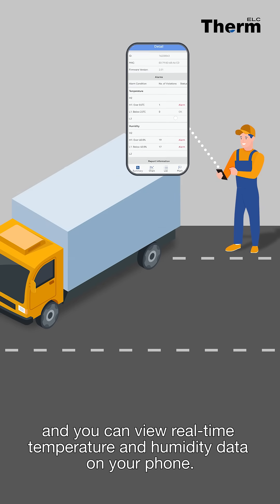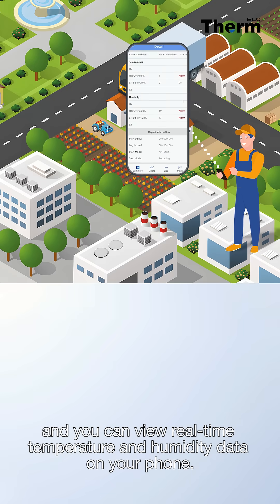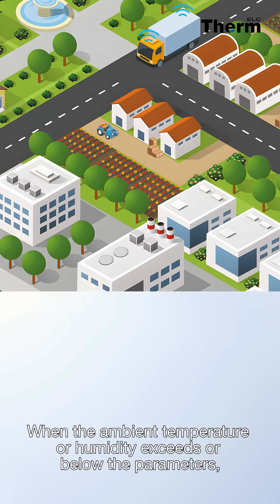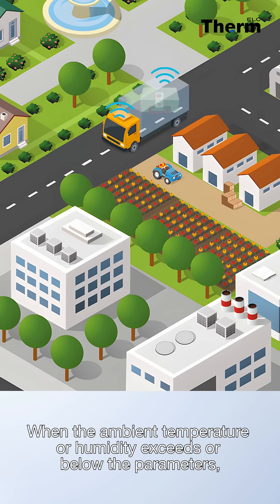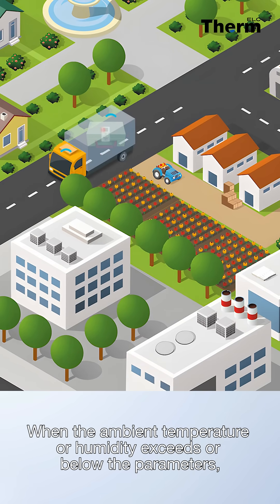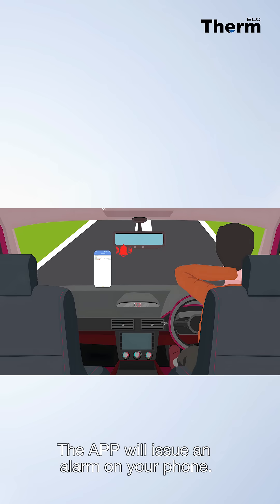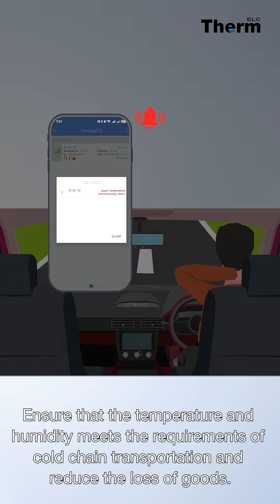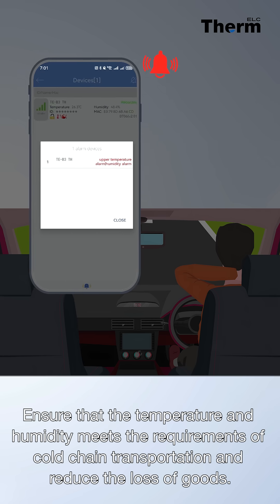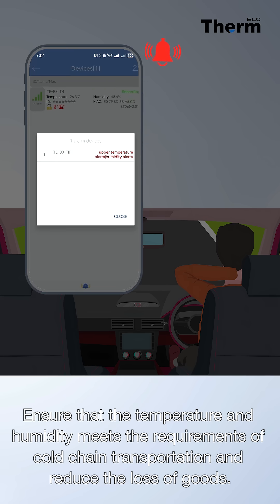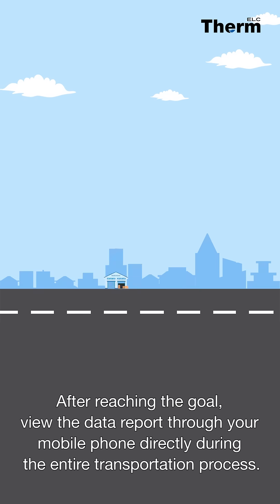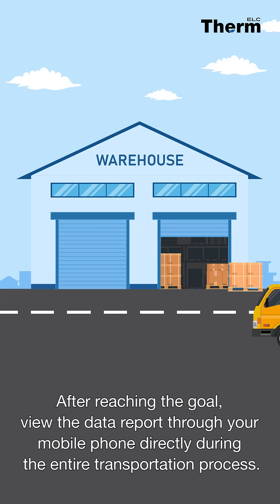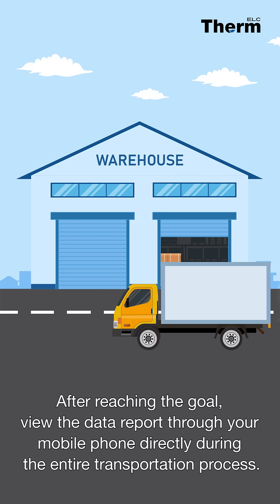You can view real-time temperature and humidity data on your phone. When the ambient temperature or humidity exceeds or falls below the set parameters, the app will issue an alarm on your phone to ensure that the temperature and humidity meets the requirements of cold chain transportation and reduce the loss of goods.